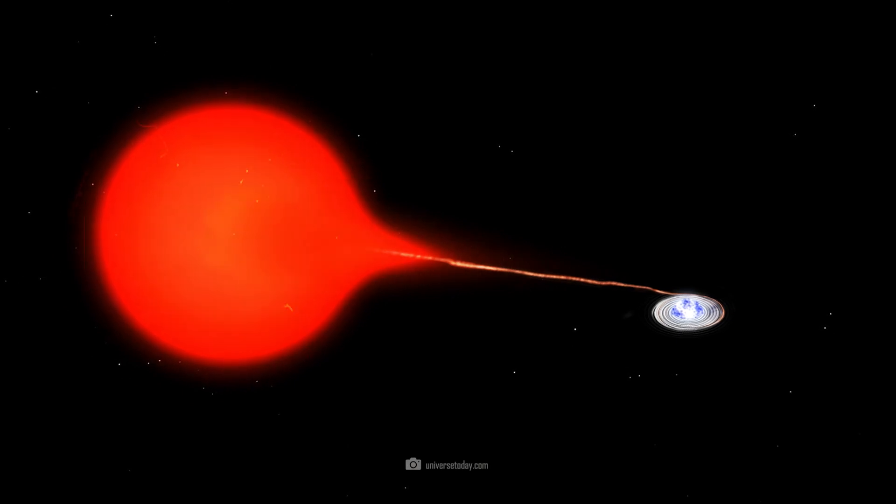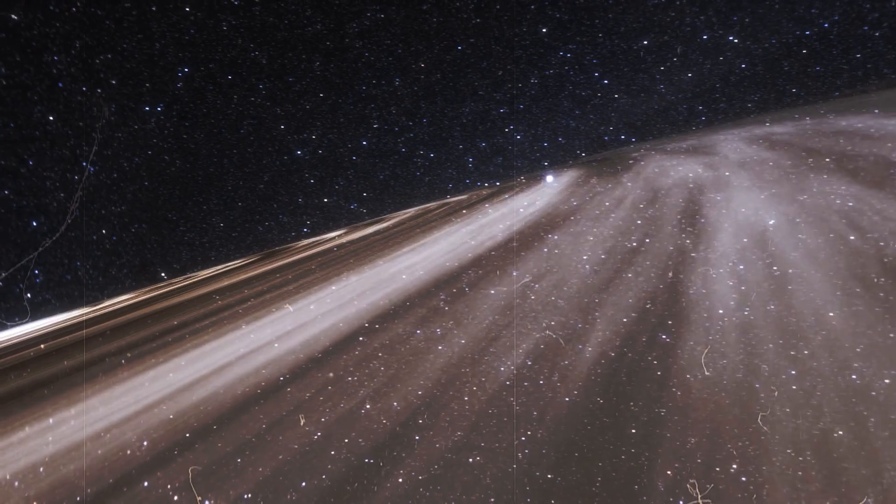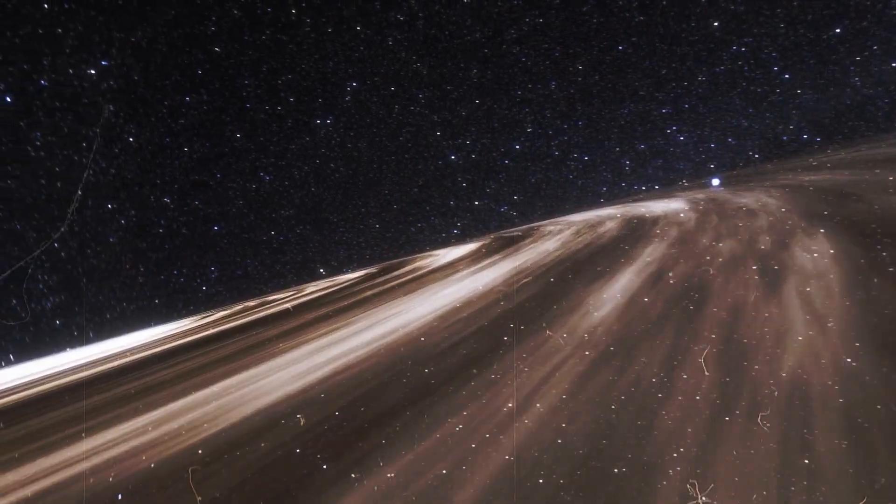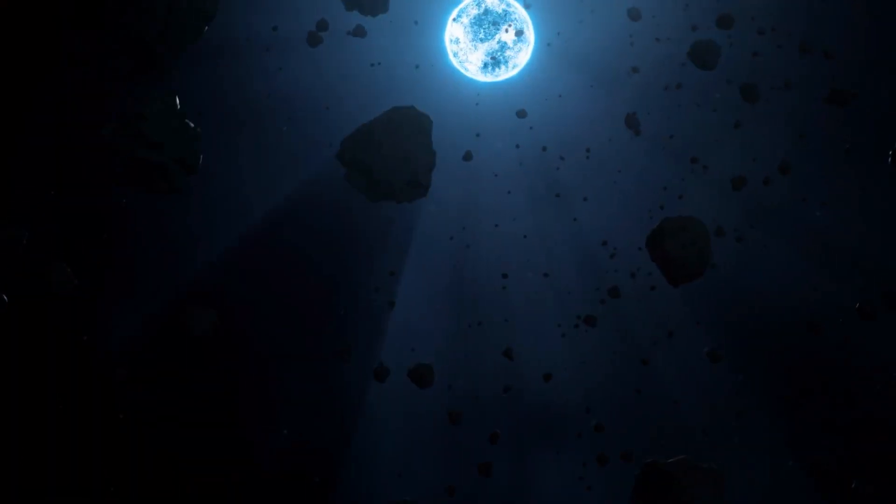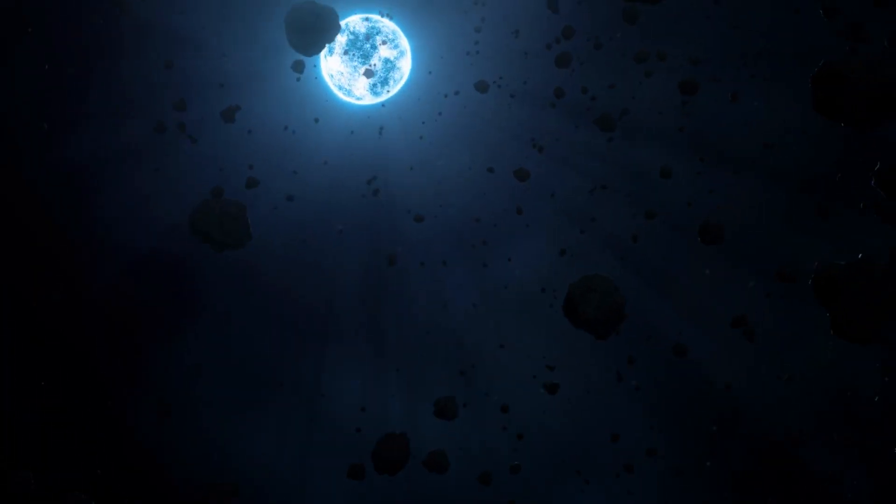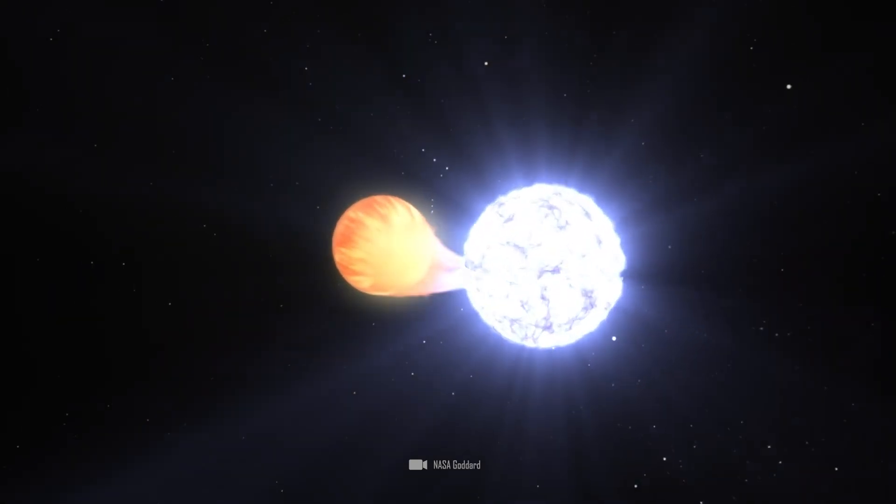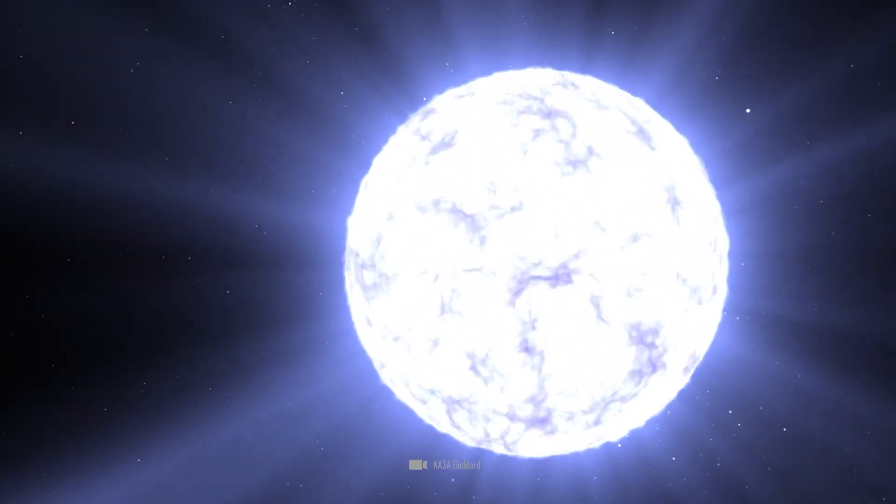In a periodic Nova system such as T Corona Borealis, the white dwarf continuously attracts matter from its companion star, a red giant, and this matter then forms an accretion disk. The mass slowly reaches the surface of the white dwarf. Now, of course, the question arises as to why this sucked-in matter then explodes.